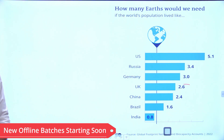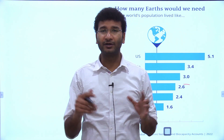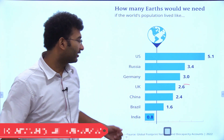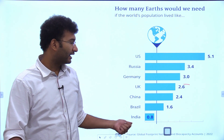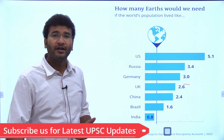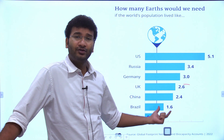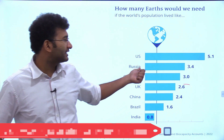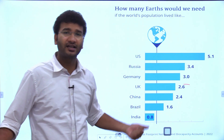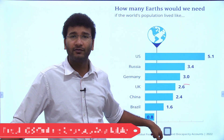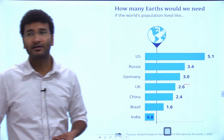A report says that if the entire world's population lived like people in the US, we would need almost 5 planets like Earth. India, on the other hand, is using resources in a deficit manner — taking more than 365 days to exhaust its share, which is a positive indicator. Countries like USA, Russia, Germany, UK, China, and Brazil — the largest economies — are the biggest consumers. India, as the fifth or sixth largest economy, is still a flag bearer of sustainable development.